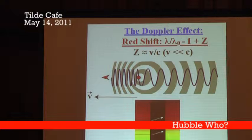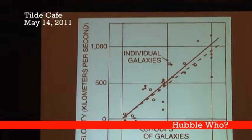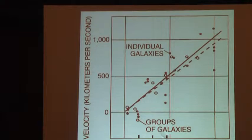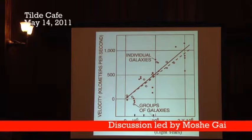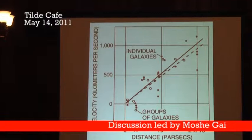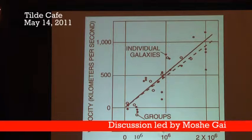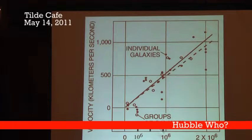He found that all the galaxies are moving away from us. And he found another thing — he found Hubble's Law. He knew how to measure the distances. He used Parsecs, but we will use light-years. For example, this is one million light-years. He measured the velocity and saw that the galaxies close to us are moving with a certain velocity, and the galaxies further away from us are moving faster. Everybody is moving away from us, and the ones further out move with a larger velocity.